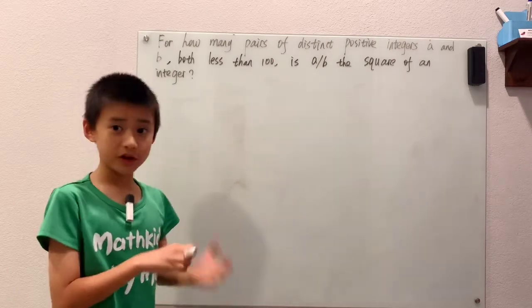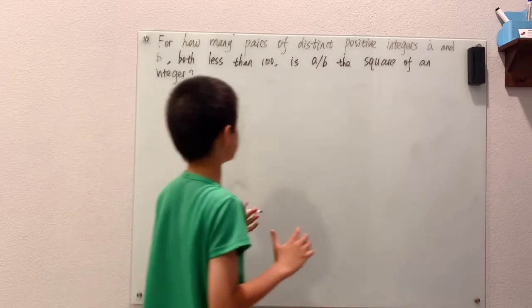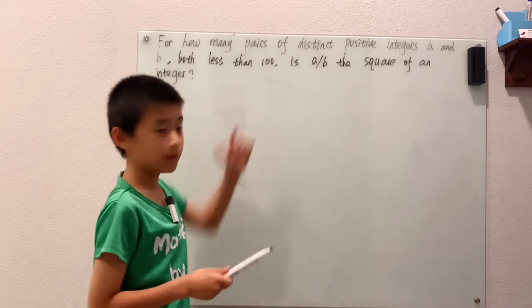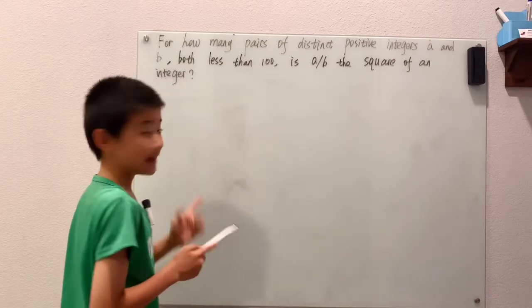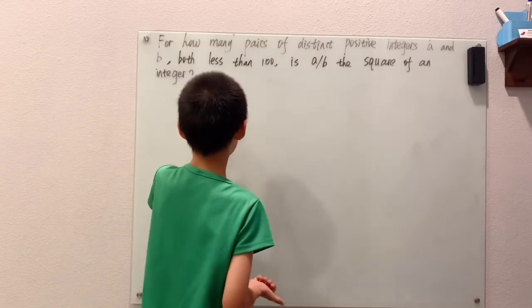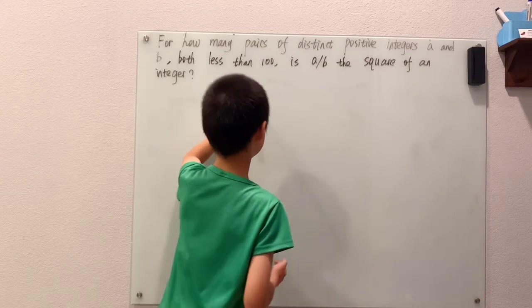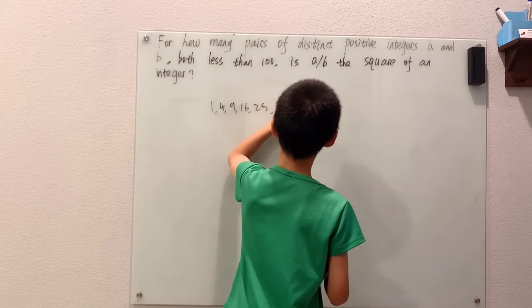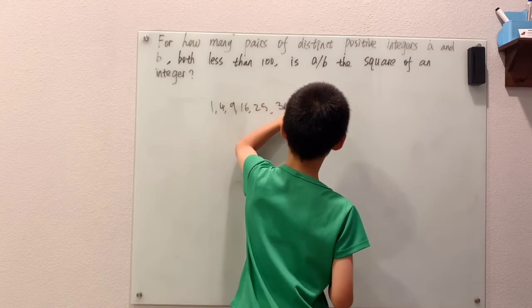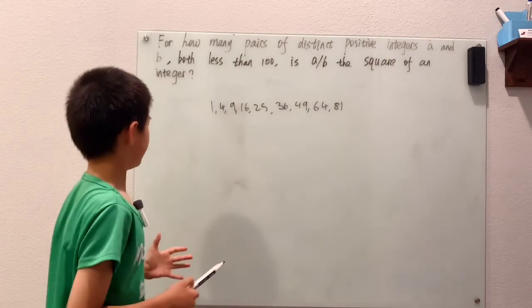And if it's also the square of an integer, a.k.a. it's a perfect square, that basically means A over B has to be a perfect square, a positive perfect square less than 100, which means that's just 1, 4, 9, 16, 25, 36, 49, 64, and 81.